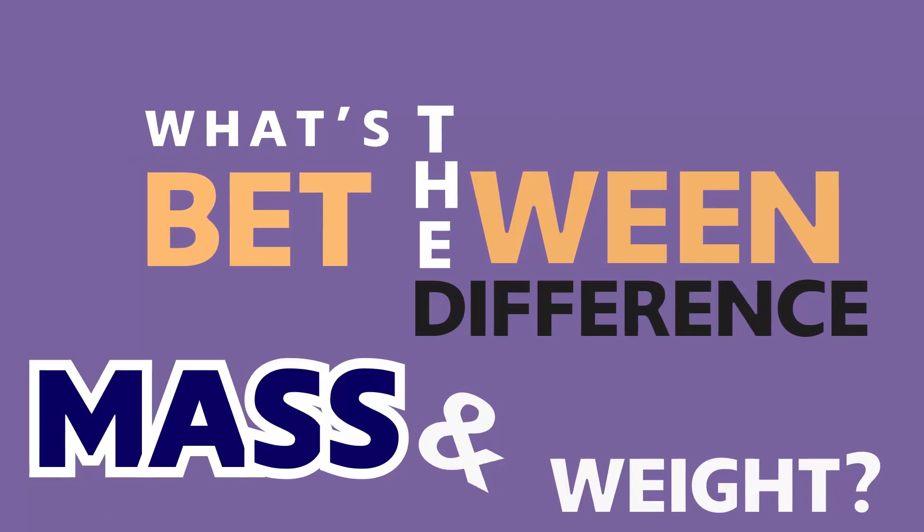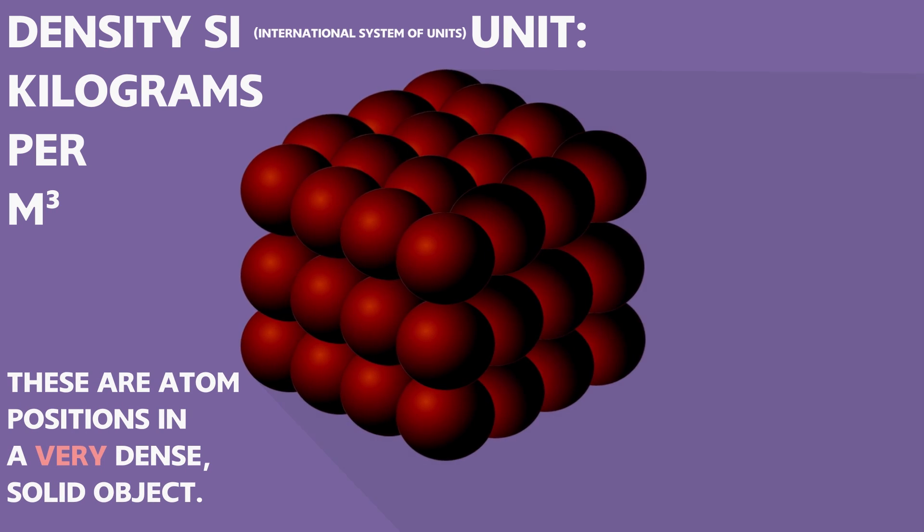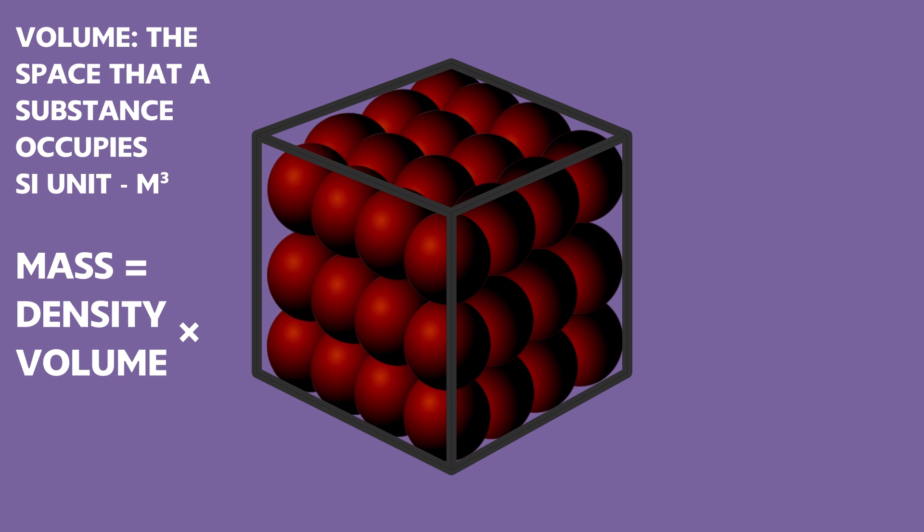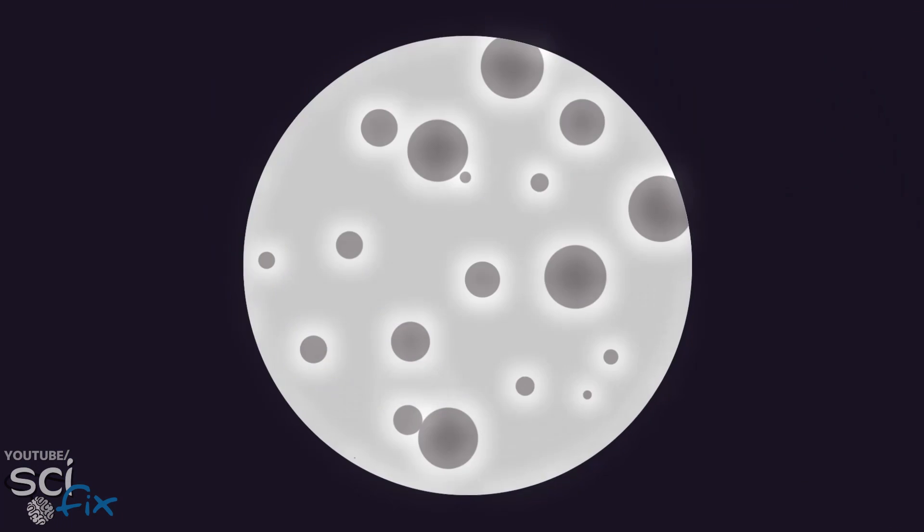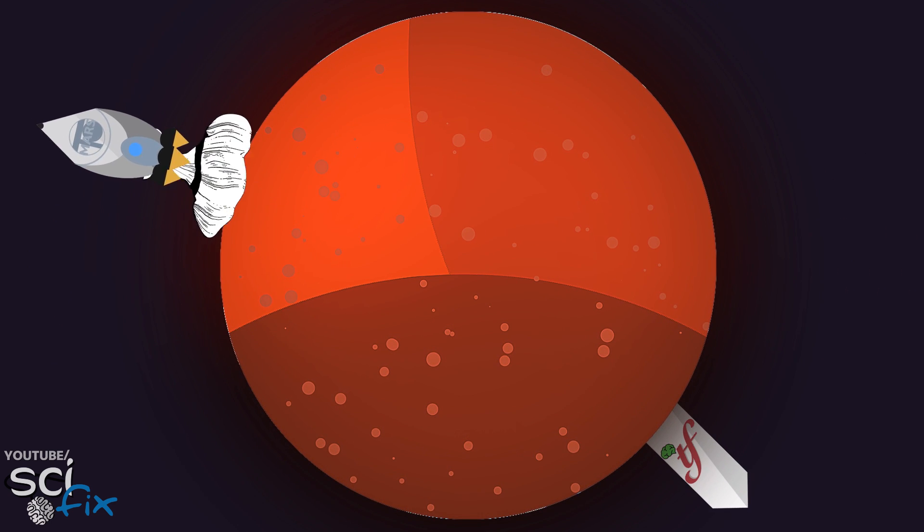But what's the difference between mass and weight? Mass is the amount of matter something is made of, object's density multiplied by its volume. And it doesn't change whether the object is on Earth, on Moon or even on Mars. The mass is same everywhere.